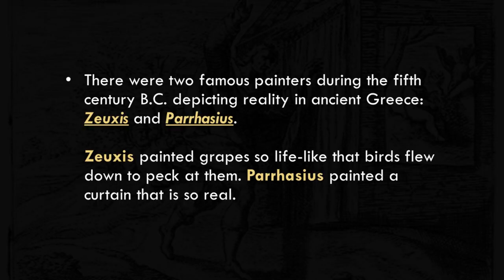There were two famous painters during the 5th century BC depicting reality in ancient Greece: Jusis and Parashius. Jusis painted grapes so lifelike that birds flew down to peck at them. And Parashius painted a curtain that was so real it fooled people. Both painters were realistic to the point that people and even animals were confused, thinking the paintings were real.